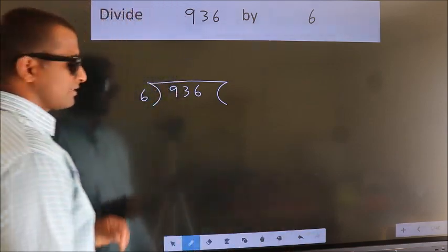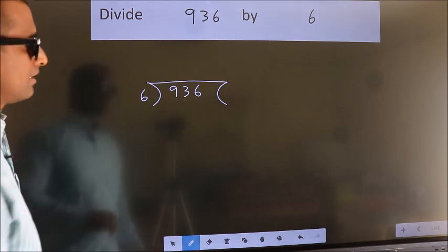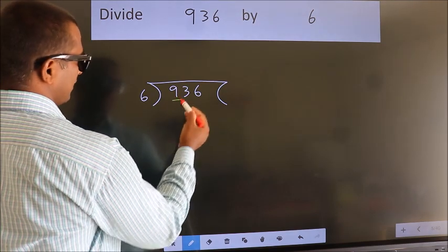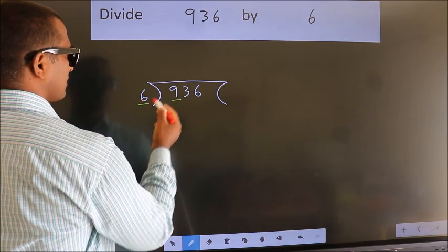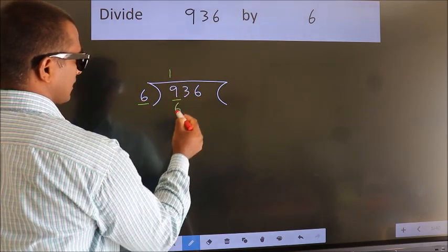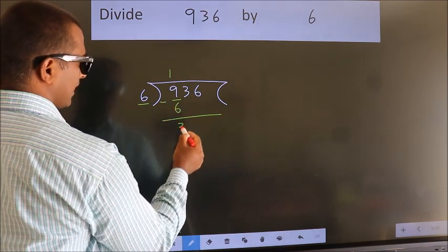This is your step 1. Next, here we have 9, here 6. A number close to 9 in 6 table is 6 once 6. Now, we should subtract. We get 3.